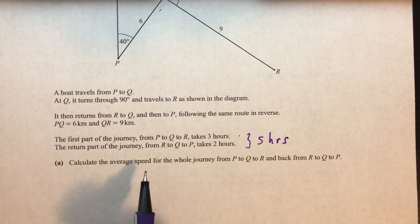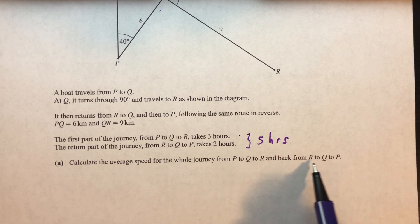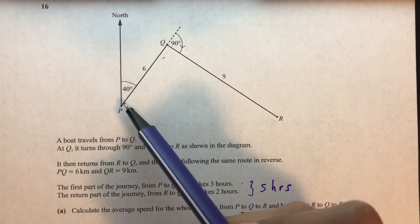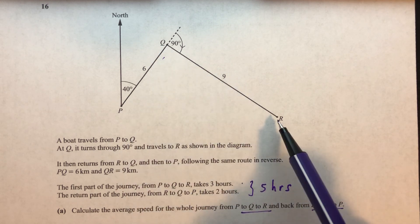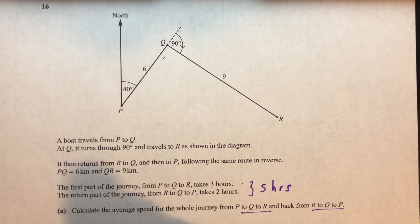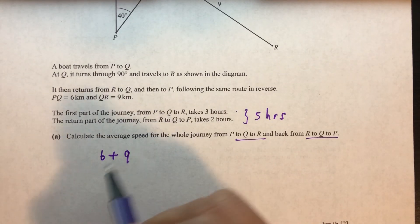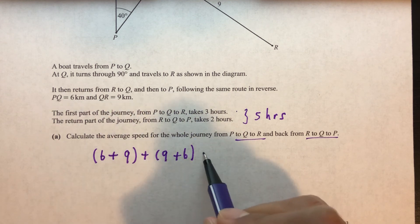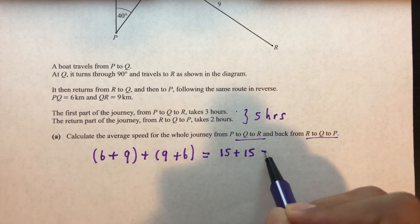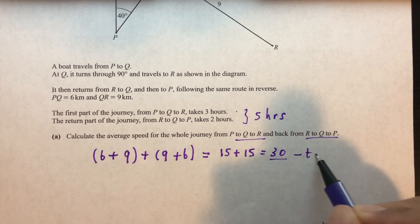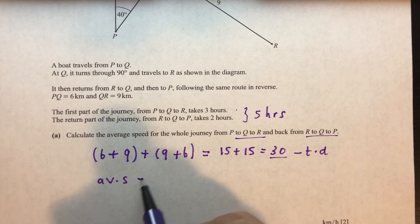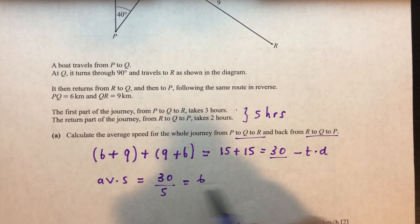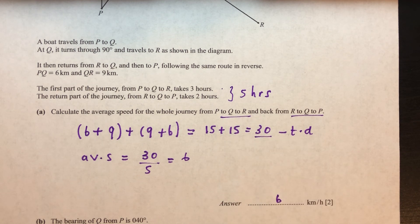Calculate the average speed for the whole journey from P to Q to R and back. The total distance: going out we have PQ = 6 and QR = 9, and coming back QR = 9 and PQ = 6. So we have 6 plus 9 for the first part and 9 plus 6 for the second part, giving 15 plus 15 equals 30. Total distance is 30. Average speed equals total distance divided by total time: 30 divided by 5 equals 6 km per hour.